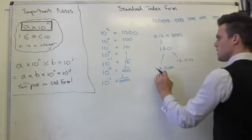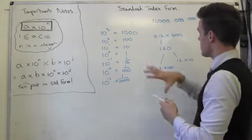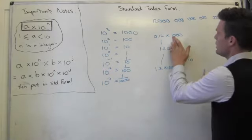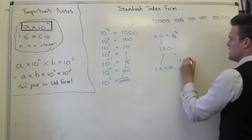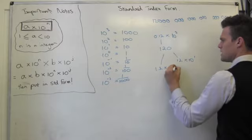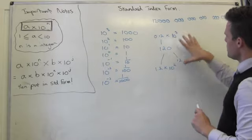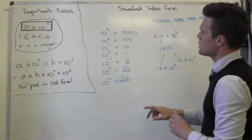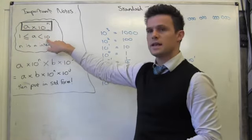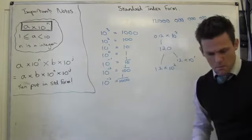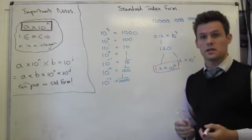As you can see, here I've got a number times a power of 10 in each case. I could rewrite 1000 as 10 to the 3, 10 as 10 to the 1, and 100 as 10 to the 2. Standard Index Form says the standard way of writing it is so that my 'a' value is greater than or equal to 1, but less than 10. So in this case, my standard index form for writing 120 would be 1.2 times 10 to the power of 2.